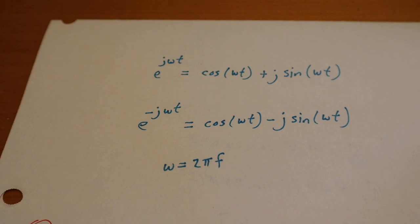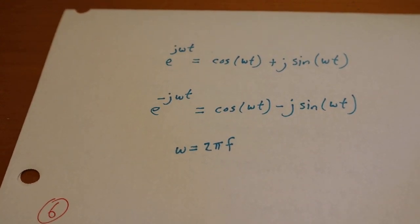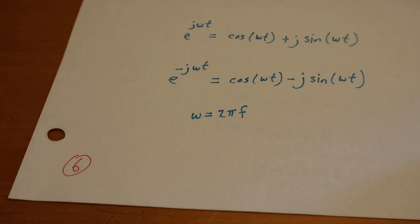And for all those out there, ω is 2π times frequency. That's slide six. Hopefully that's clear as mud to everyone.